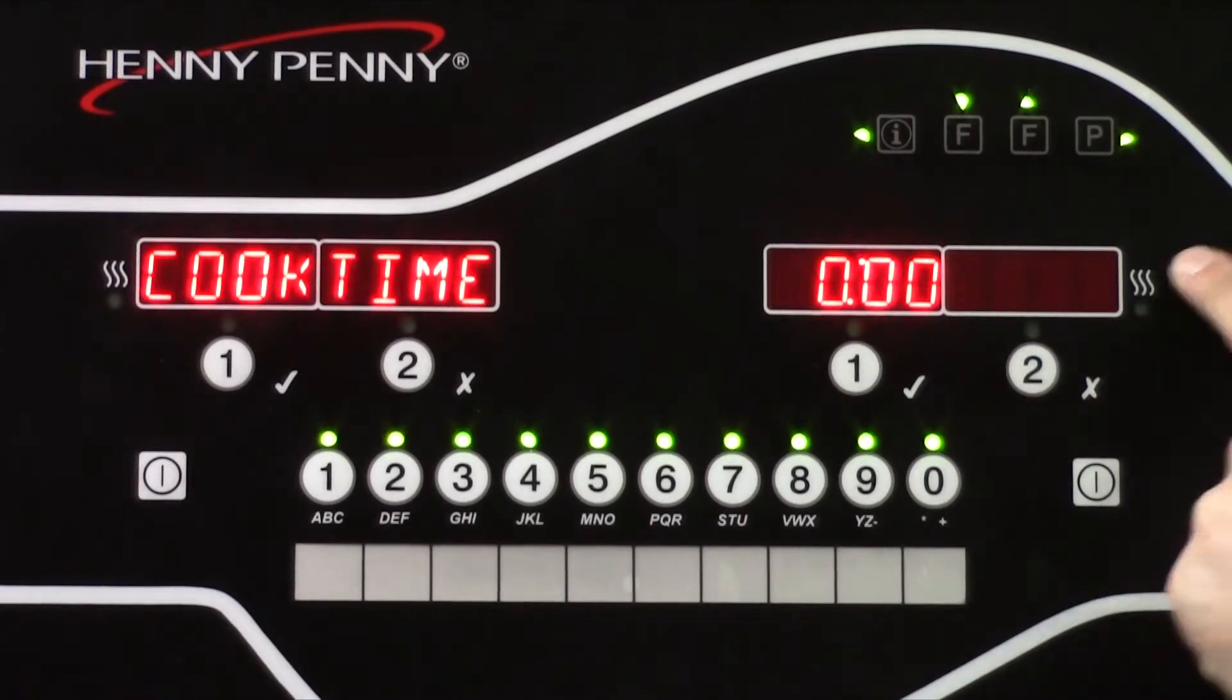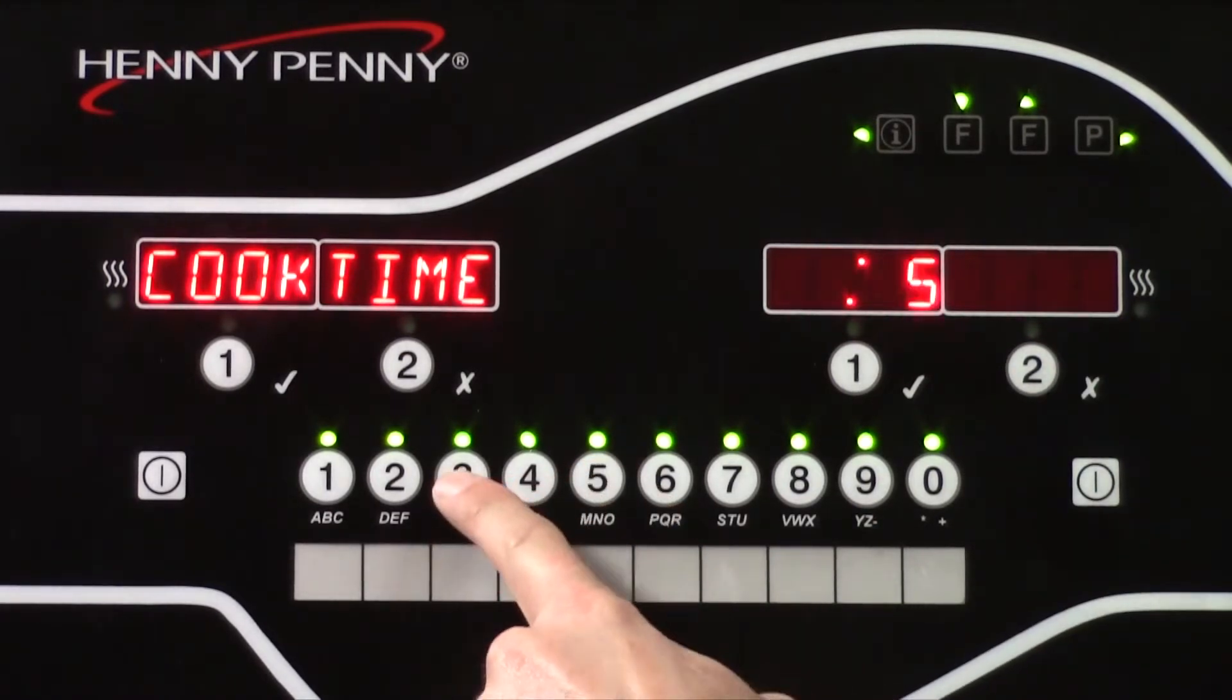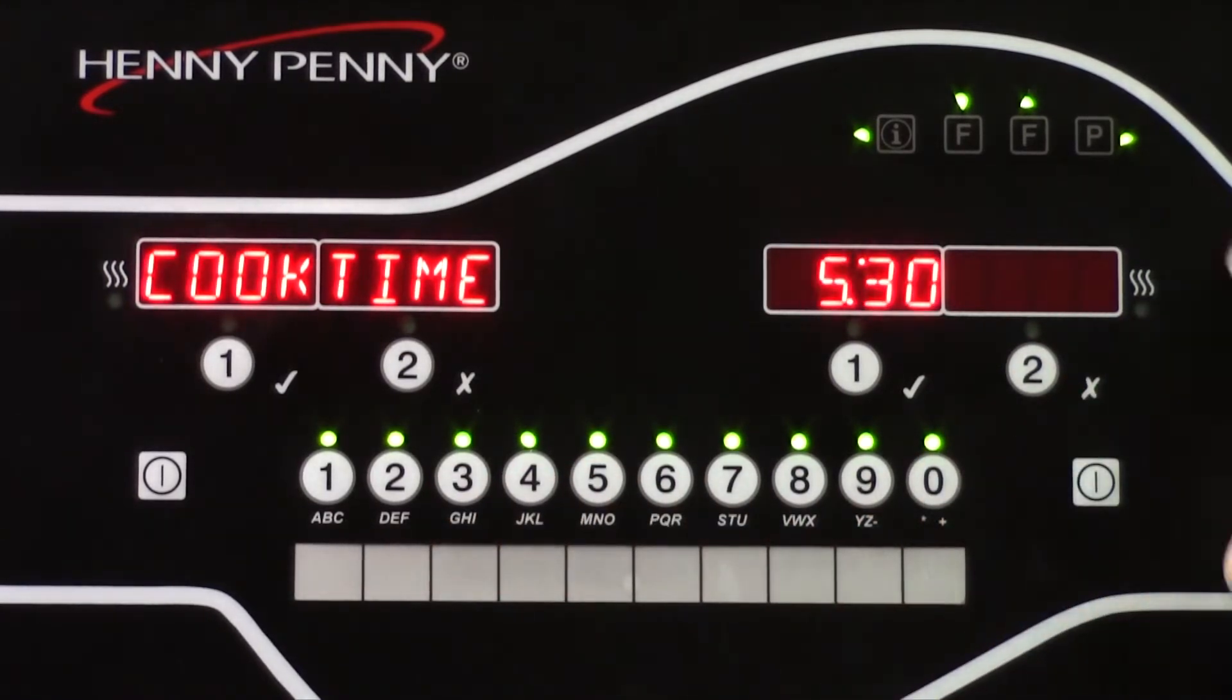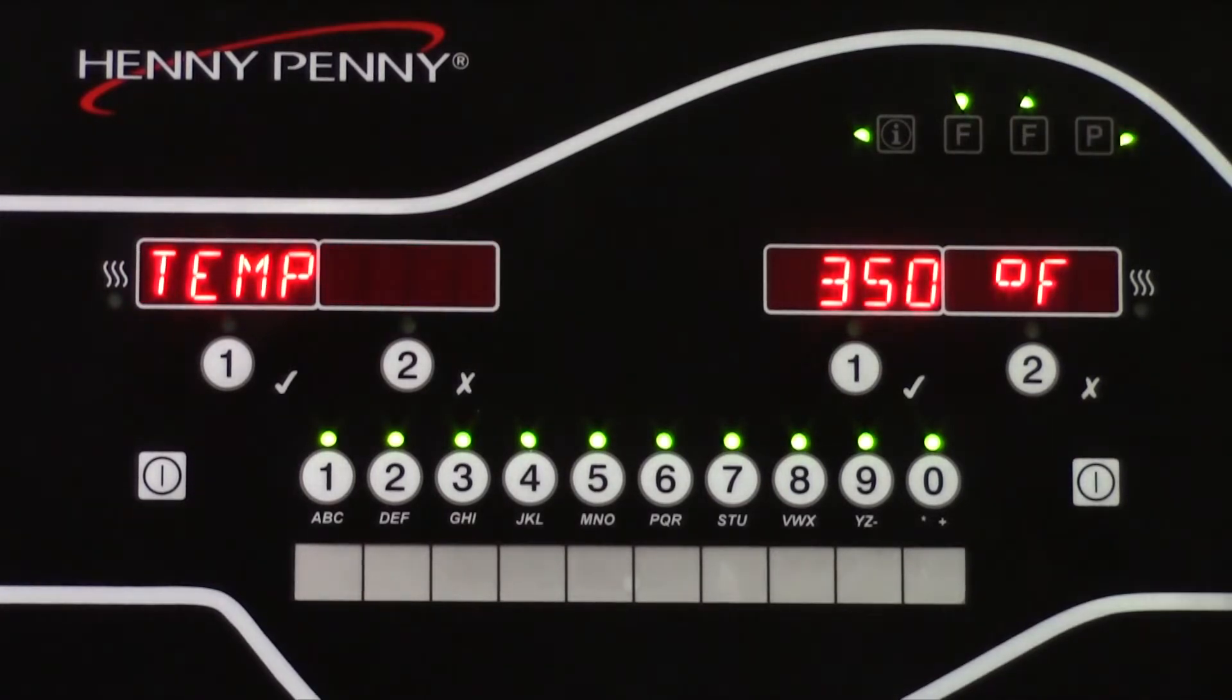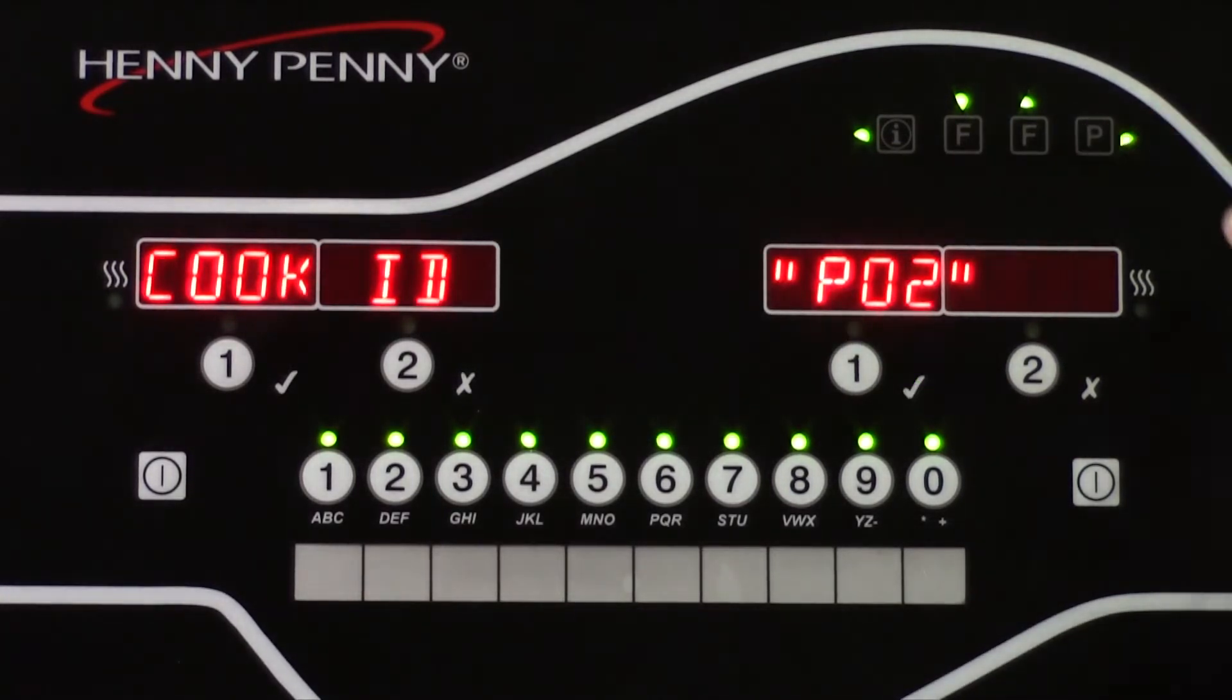Press the P program button again, and now enter the cook time. Our temperature is already set to 350 degrees, so we can scroll to the next step.